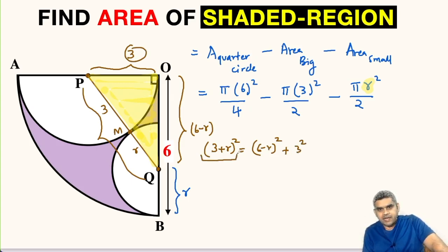Now let us expand this bracket using identity (a + b)². So we will get 9 + r² + 6r equals, here we will expand using identity (a - b)², so this will be 36 + r² - 12r, then 3² will be 9.